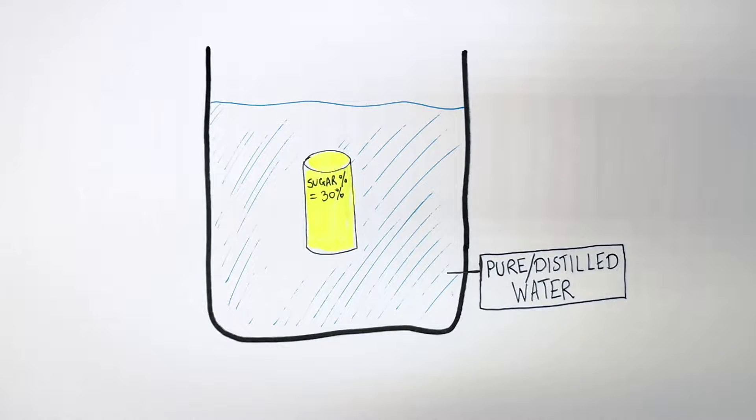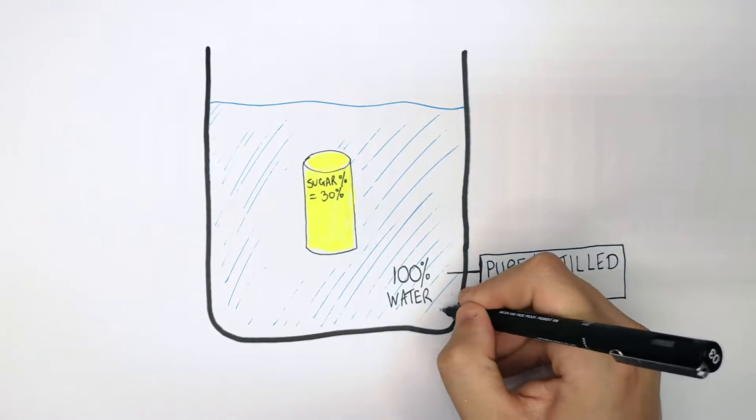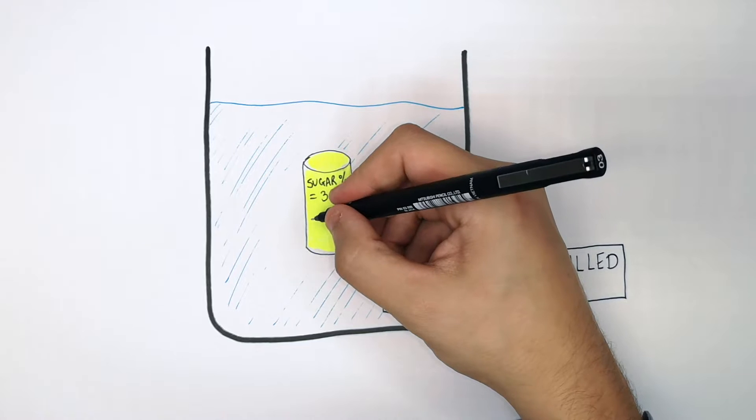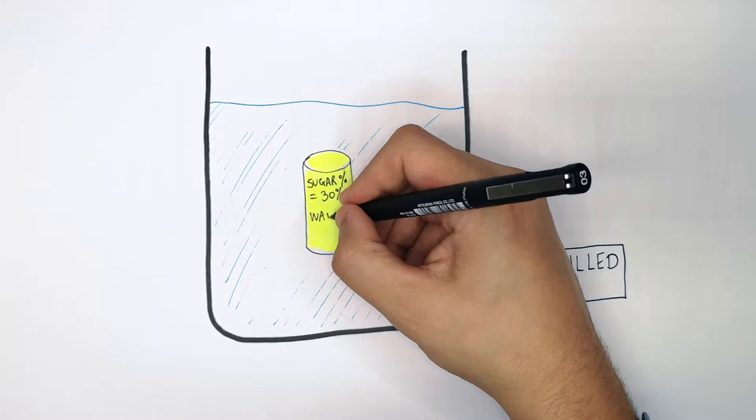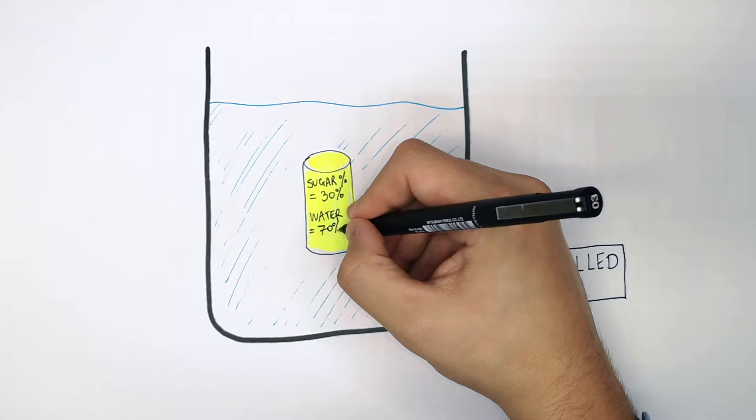So now step number one from our rules is calculate the water concentration. So in the beaker, it's 100% because it's pure distilled water. Inside the potato, we're going to work out the water concentration there. So the water concentration in the potato is going to be 70%.